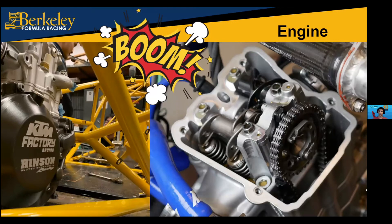Engine is one of our biggest and most passion-driven subsystems. There are multiple philosophies when choosing an engine. In Germany, where Formula SAE is most competitive, some teams create alliances with manufacturers — Porsche makes a Formula SAE engine for one school there, which is incredible. We are grateful for our relationship with KTM, a dirt bike motorcycle company, who gives us their factory racing motors which are extremely light. The competition limit is a 710cc motor; we use a much smaller motor in pursuit of as light a car as possible.